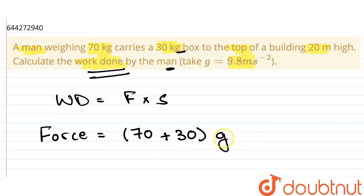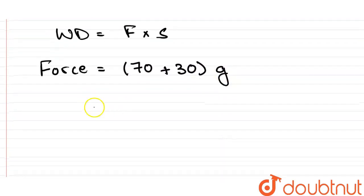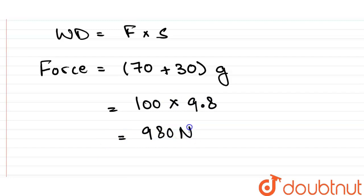Mass into g will be the total force acting on the man. So this will be 100 into 9.8, giving us a total force of 980 newtons.